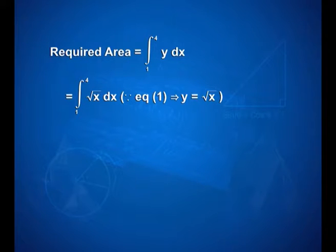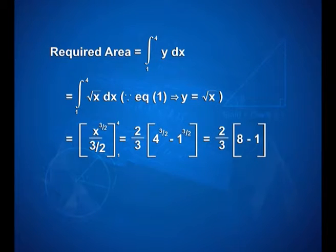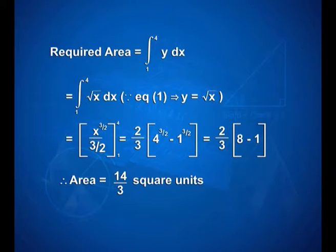Since equation 1 gives us y is equal to square root of x, this equals x to the power 3/2 divided by 3/2, with limits 1 and 4. On applying limits, we have 2/3 into (4 to the power 3/2 minus 1 to the power 3/2), that is equal to 2/3 into (8 minus 1), giving us 14/3 square units as area.